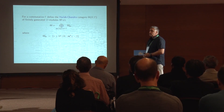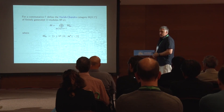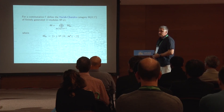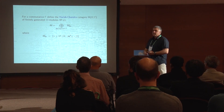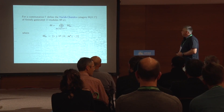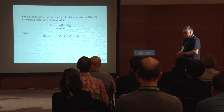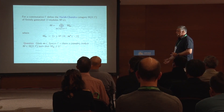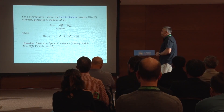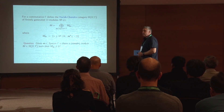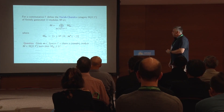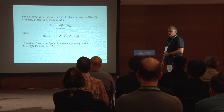Each subspace labeled by a maximal ideal m consists of those elements annihilated by a certain power of the maximal ideal. Equivalently, one can speak about labeling by the characters of gamma, with the maximal ideal being the kernel of this character. I will use these two languages — ideals and characters — equally. The question is: given a maximal ideal of the commutative sub-algebra gamma, can we find a simple module in this category such that the component labeled by this maximal ideal is non-trivial?